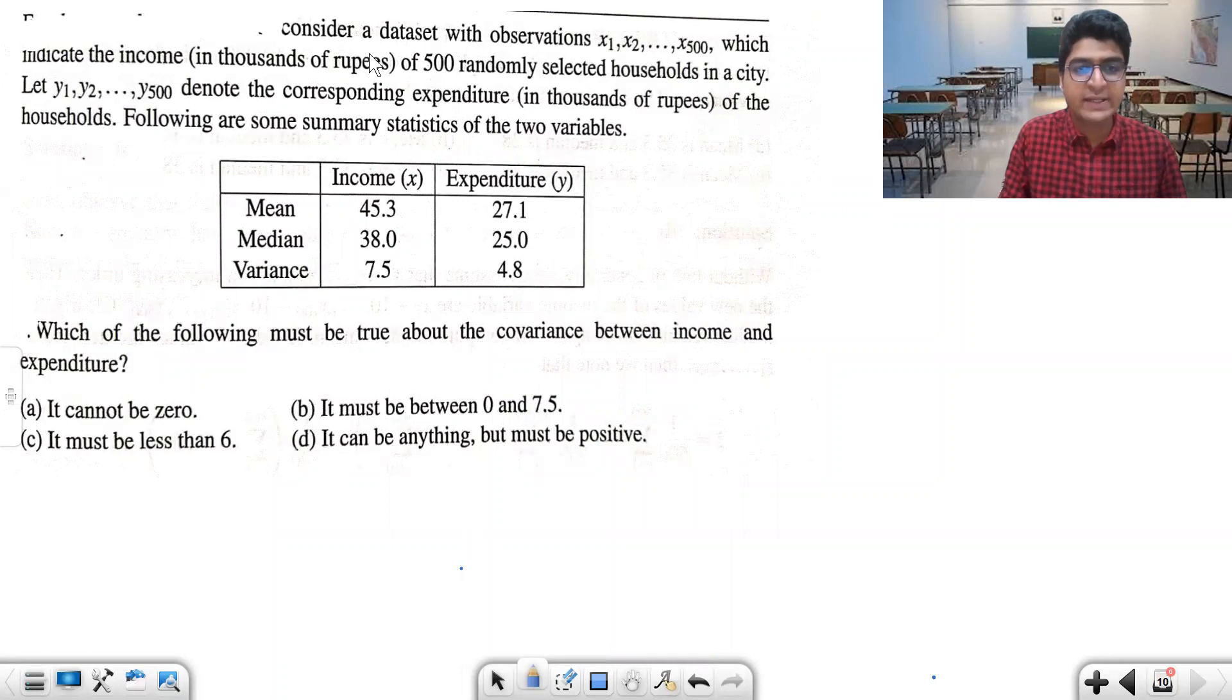The question asks us to consider a dataset with observations X1, X2 up till X500. The number of observations are 500, which indicate the income in thousands of rupees of 500 randomly selected households in a city. Y1 to Y500 denote the corresponding expenditure. So we have income and expenditure.